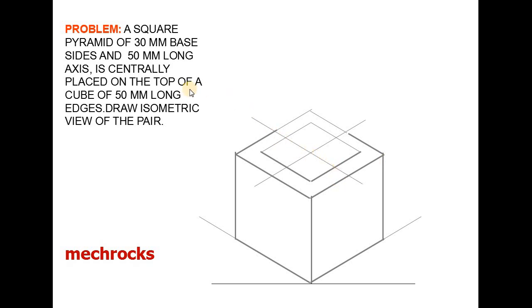Now we have to draw the axis length of 50mm. From this you take 50mm line like this. Now join this apex with this corner. Similarly this corner also. Similarly this corner also. Similarly this corner also. Like this you can draw the isometric of the given object.